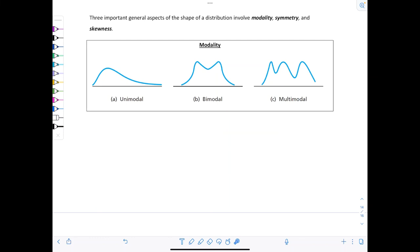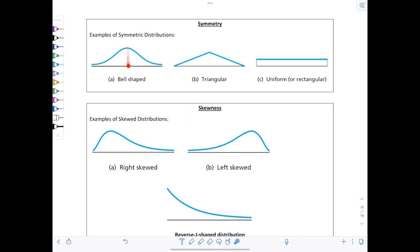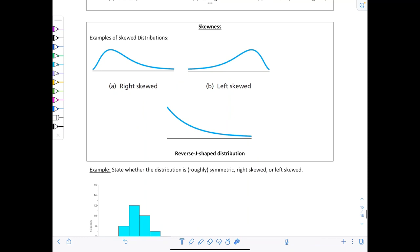Now the time has come. The distribution of a data set is a table, graph, or formula that provides the values of observations and how often they occur. For example, here's a relative frequency histogram and an approximating smooth curve for the distribution of heights. We want to analyze the shape of our distributions because it gives us a lot of information about the data we collected. Three important general aspects of the shape involve modality, symmetry, and skewness. Modality has to do with how many peaks there are in a graph. Unimodal means there's one peak, one max. Bimodal would be two and multimodal is just more than two.